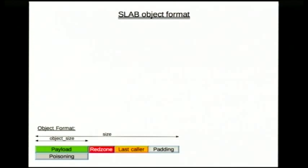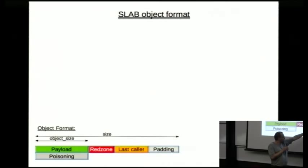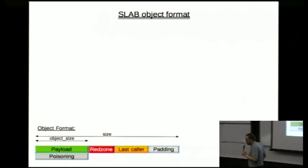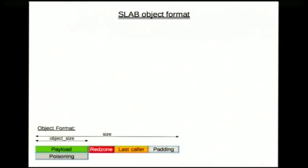The slab object format is simple: a payload, and if allocated it's in use. In debugging mode — which requires kernel recompile — you have a red zone to detect writes past the end of the object, tracking of who last touched the object, and padding for alignment. On the other hand, slab has overhead: the free list table in the page frame, padding for alignment boundaries, and coloring to avoid always placing objects at zero cache offset. This makes slab the most memory-inefficient of the three allocators.